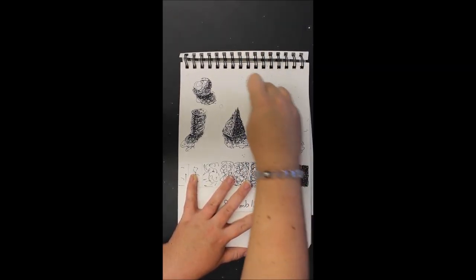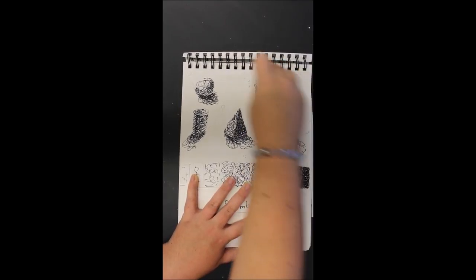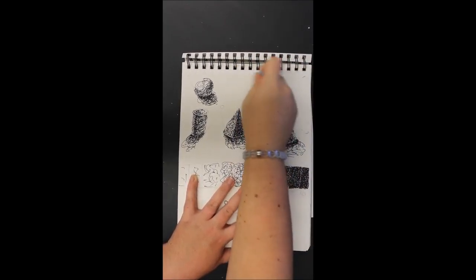So we should see those edges between the differences of values, not an outlined shape.